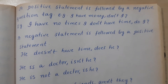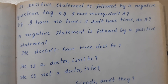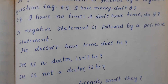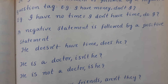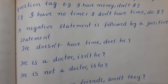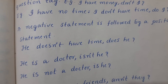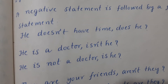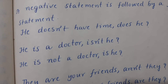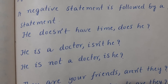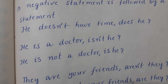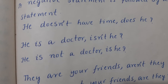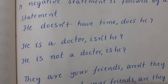A negative statement is followed by a positive question tag. 'He doesn't have time' is a negative statement, so the question tag will be positive: 'does he?' Another example: 'He is a doctor' — positive statement — 'isn't he?' And 'He is not a doctor' — negative statement — so the question tag will be positive: 'is he?'